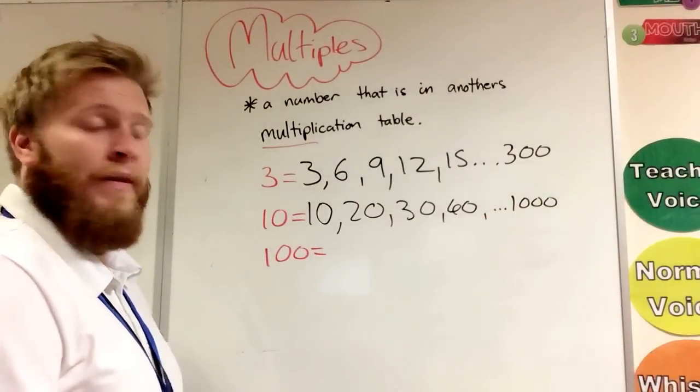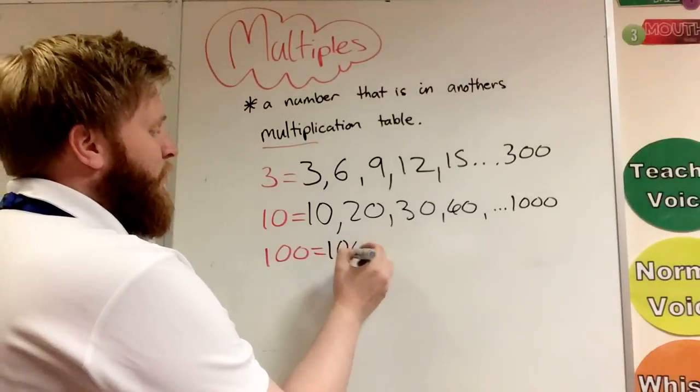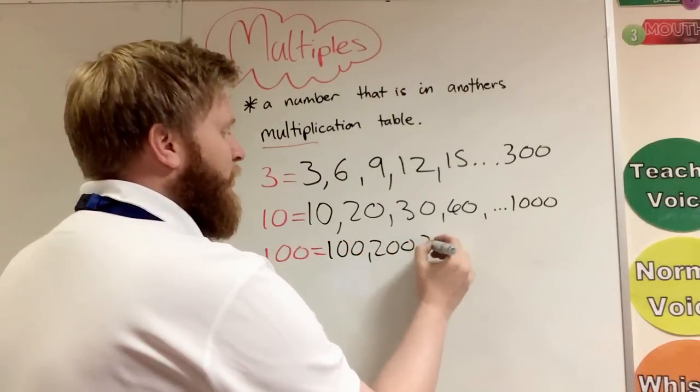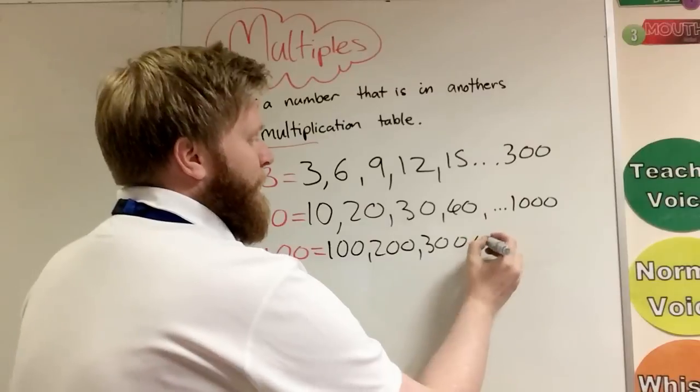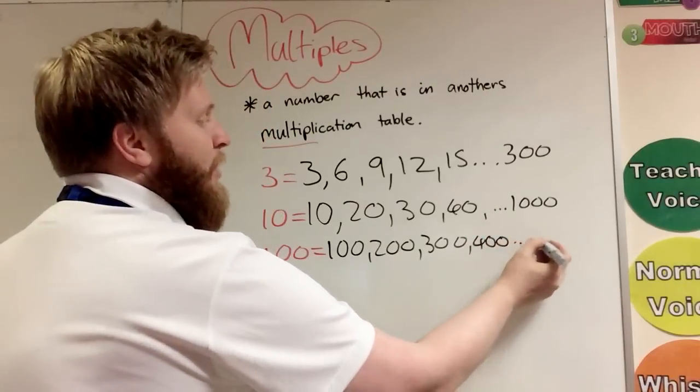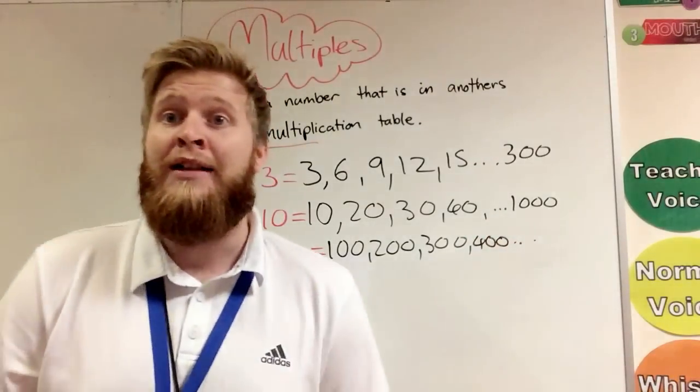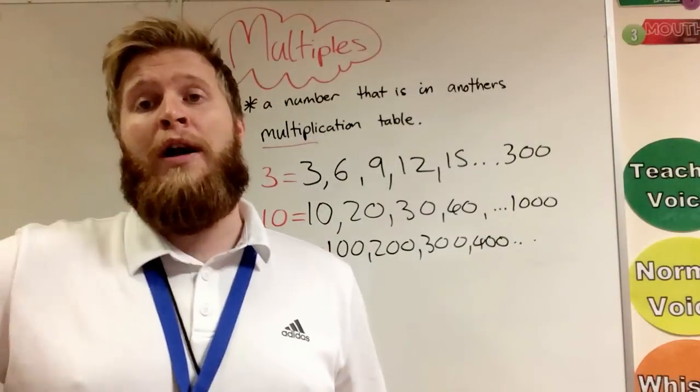Same with a hundred. We've got 100 - these are the first four multiples of a hundred. They're in the multiplication table and we can go on.